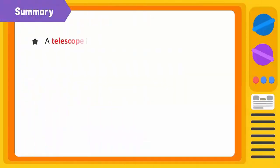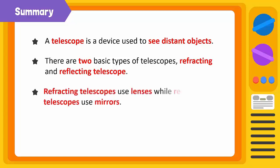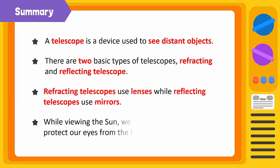Today we learned a telescope is a device used to see distant objects. There are two basic types of telescopes: refracting and reflecting telescopes. Refracting telescopes use lenses while reflecting telescopes use mirrors. While looking at the sun, we must take precautions to protect our eyes from its harmful rays.